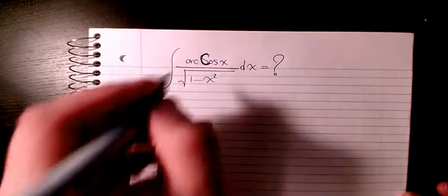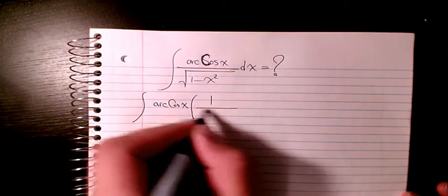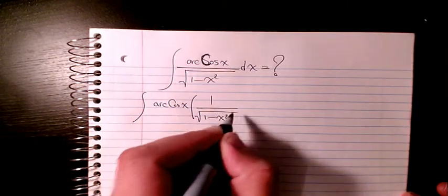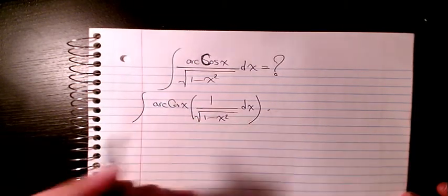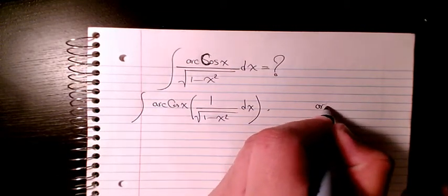The first thing I'll do is separate them. It's going to be arccos x times 1 over square root of 1 minus x squared dx. As you see here, the derivative of arccos is